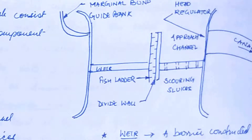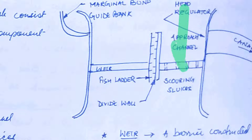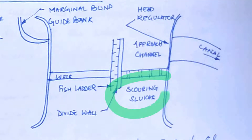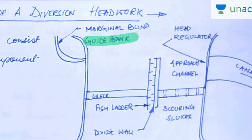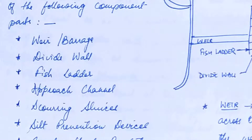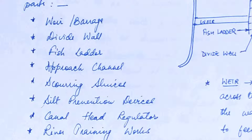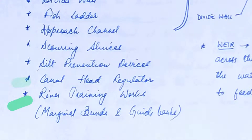We also have divide walls. In front of the divide walls you can see a structure called the fish ladder. There is an approach channel, and these are the scouring sluices. You can see the main canal with a head regulator provided there. There is also a marginal bund and guide banks. So the different components of a diversion head work consist of a weir or barrage, divide wall, fish ladder, approach channel, scouring sluices, silt prevention devices, canal head regulators, and river training works like marginal banks and guide banks.